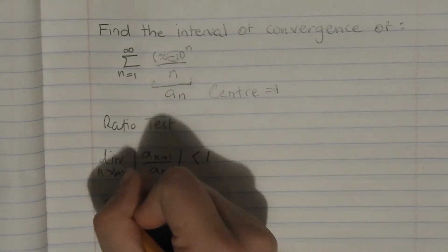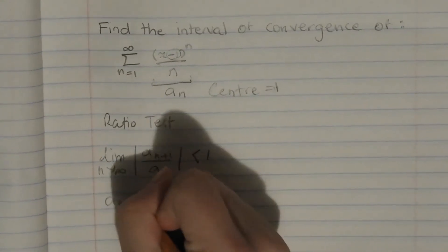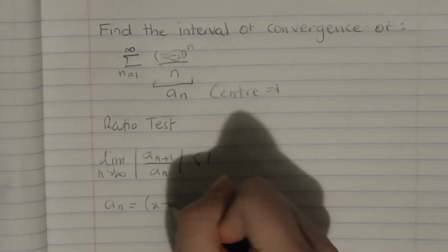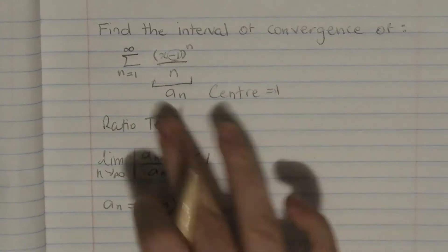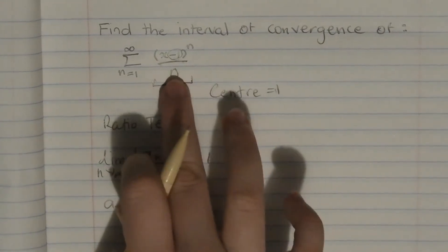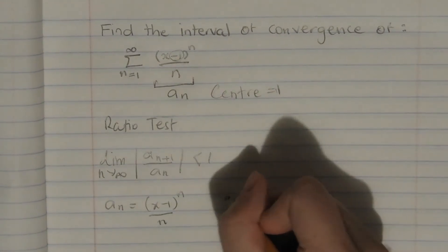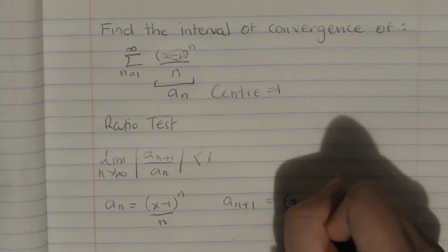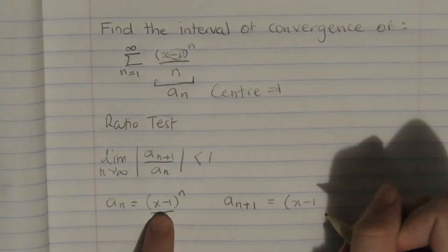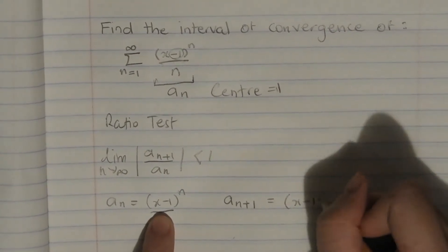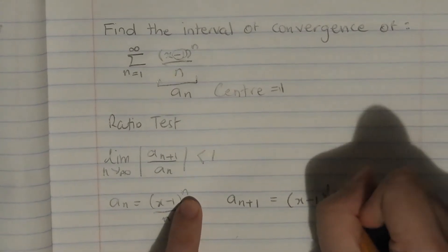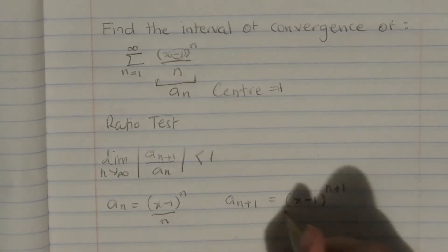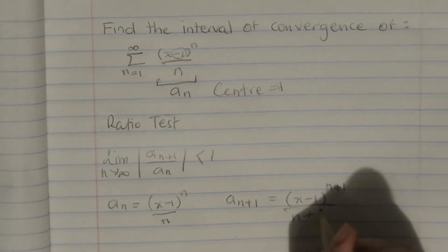So a_n equals (x minus 1) to the n on n, as stated. And a_(n+1) equals (x minus 1) to the n+1, because there's no n in that base so it doesn't change, divided by n plus 1.